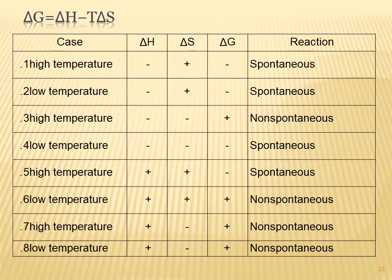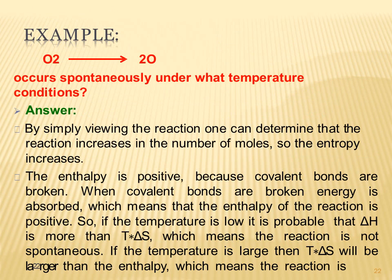At high temperature, ΔG is affected by TΔS. When ΔH is positive and ΔS is positive, at low temperature the reaction is non-spontaneous; at high temperature the reaction becomes spontaneous because TΔS becomes larger than ΔH, making ΔG negative.